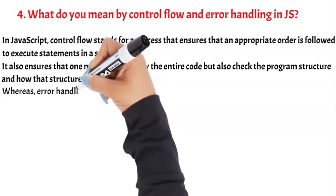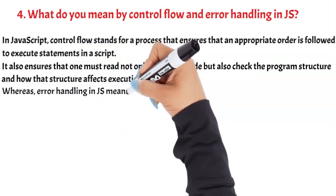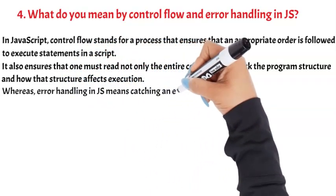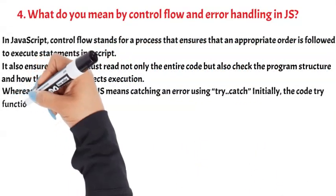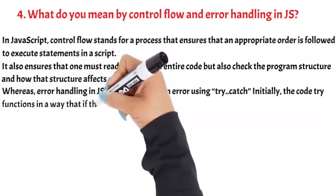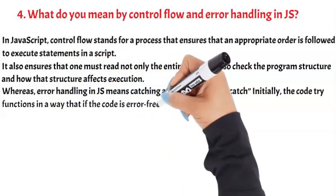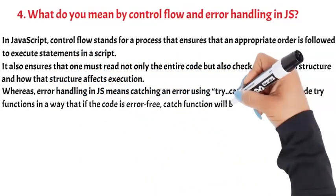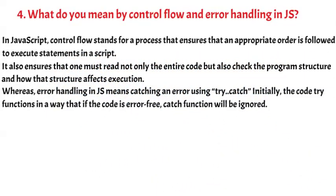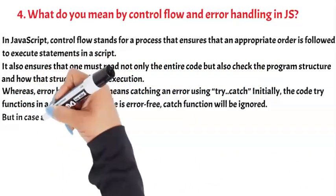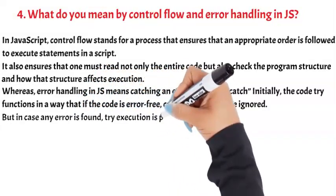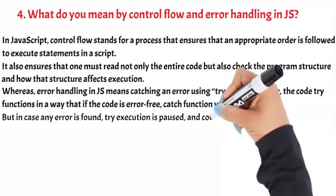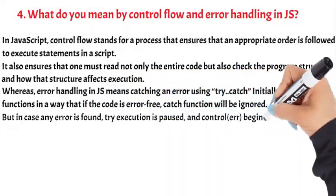Error handling in JS means catching an error using try-catch. The try block functions in a way that if the code is error-free, the catch function will be ignored. But in case any error is found, try execution is paused and the catch controller begins.